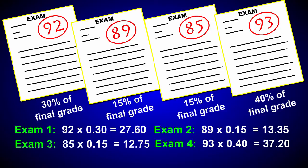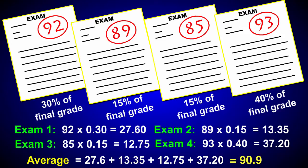Exam 3 is 85 times 15%, and exam 4 is 93 times 40%. To get your final grade average, simply add the calculated points together. The final grade for your biology course is 90.9, or 91 when rounded up.